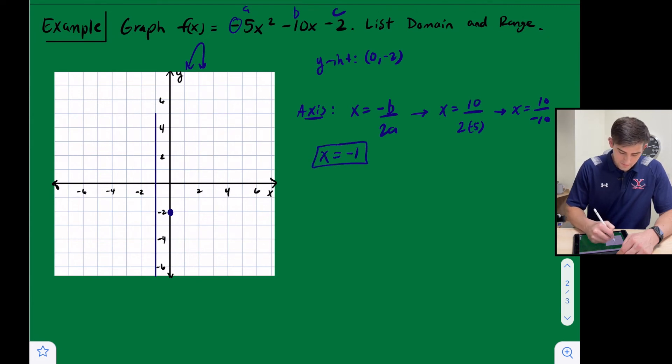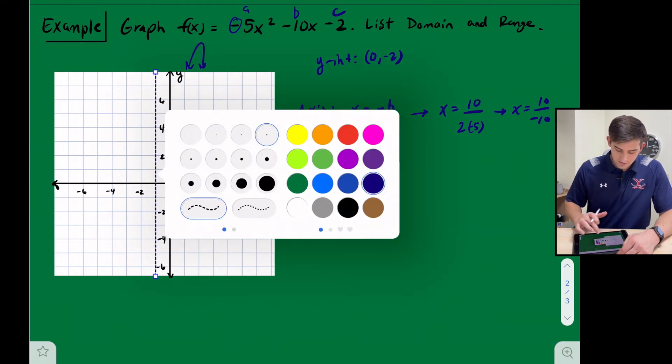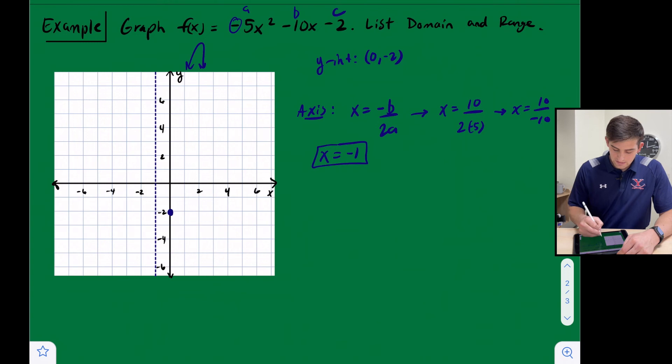So now we can put our axis of symmetry through x equals negative 1. And we'll make that a dashed line. And now let's choose for our vertex, we're going to plug negative 1 into our original equation. So we're going to say f of negative 1.